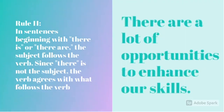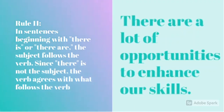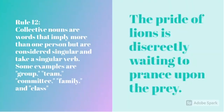Rule 11 is, in sentences beginning with there is or there are, the subject follows the verb. Since there is not the subject, the verb agrees with what follows the verb. An example is, there are a lot of opportunities to enhance our skills. Here, we can see that are agrees with opportunities.